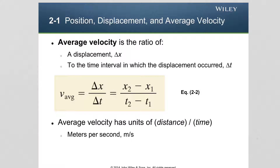Another unit also used in some problems is kilometers per hour. Since average velocity is defined as the ratio of displacement, which is a vector quantity, divided by time, which is a scalar, the average velocity is also a vector quantity. The average velocity is essentially proportional to the displacement.